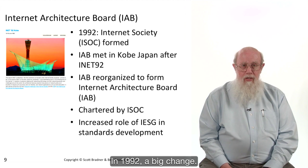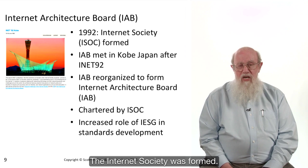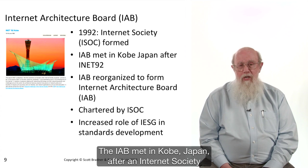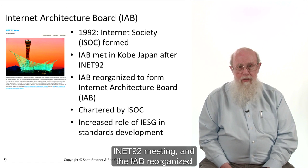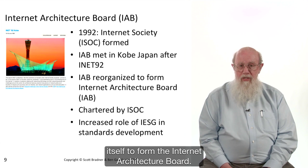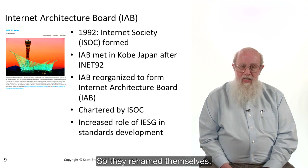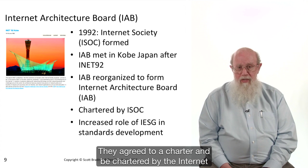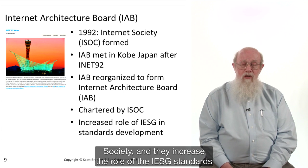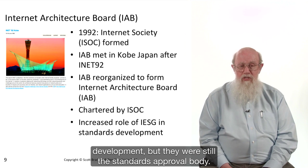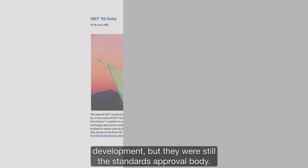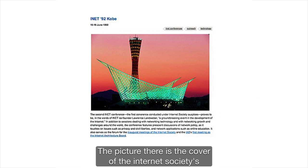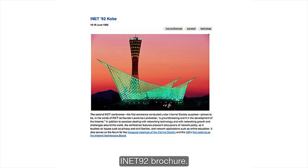In 1992, a big change: the Internet Society was formed. The IAB met in Kobe, Japan, after an Internet Society INET 92 meeting, and the IAB reorganized itself to form the Internet Architecture Board — renaming themselves. They agreed to a charter and to be chartered by the Internet Society, and they increased the role of the IESG in standards development, though they were still the standards approval body.